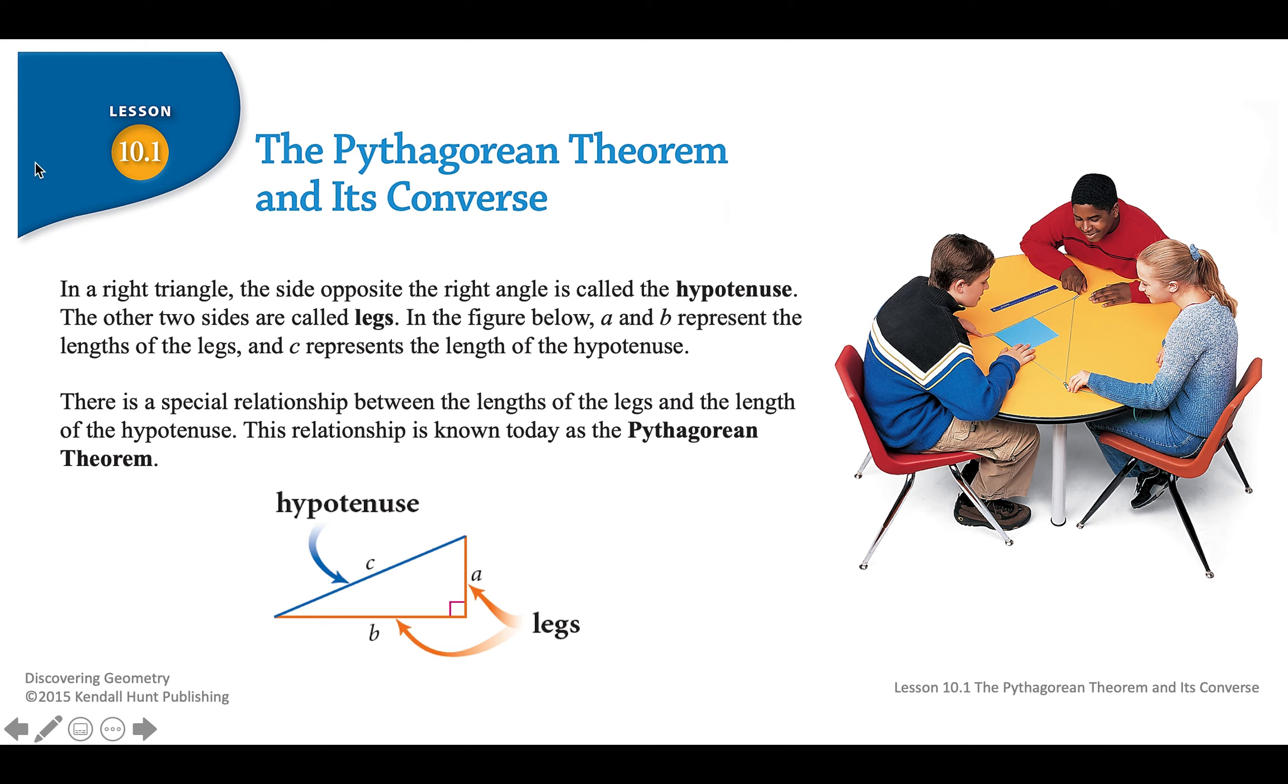There is a special relationship between the lengths of the legs and the length of the hypotenuse. The relationship is known today as the Pythagorean Theorem. So we'll learn what that theorem says. But for now, make sure you know what legs look like on a right triangle and what a hypotenuse looks like on a right triangle.